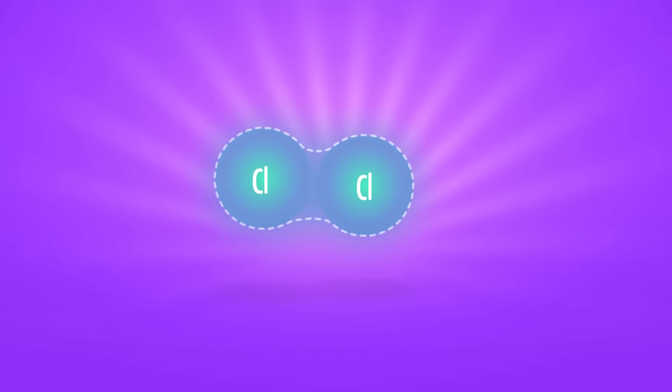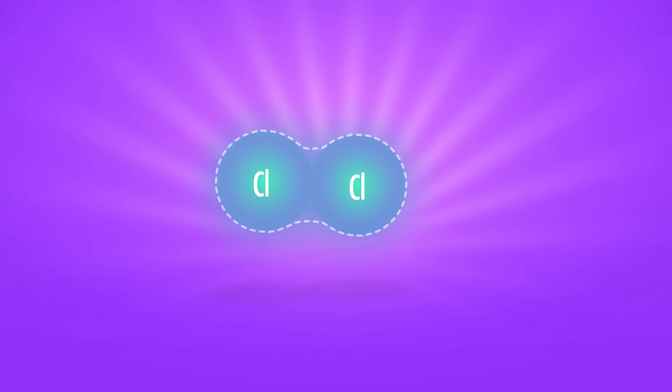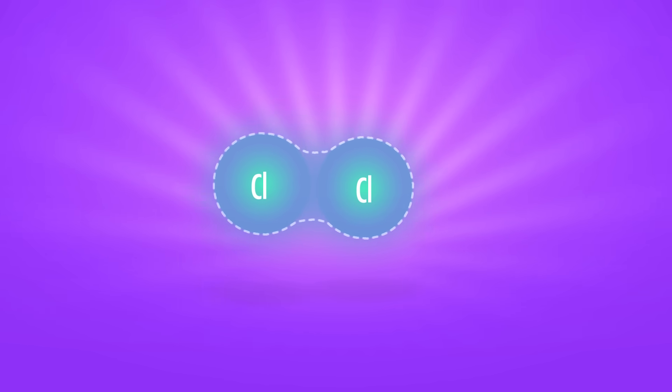In a covalent bond, the bonding electrons spend most of their time between the nuclei, and the nuclei stay close together because they're attracted to the electrons. This concept of electrons holding everything together is itself just another model — an idea that represents molecules in a way that can be visualized, and it's a more accurate representation of reality than the ball-and-stick model. But the ball-and-stick model isn't useless; it helps us visualize and understand many important things about molecules.